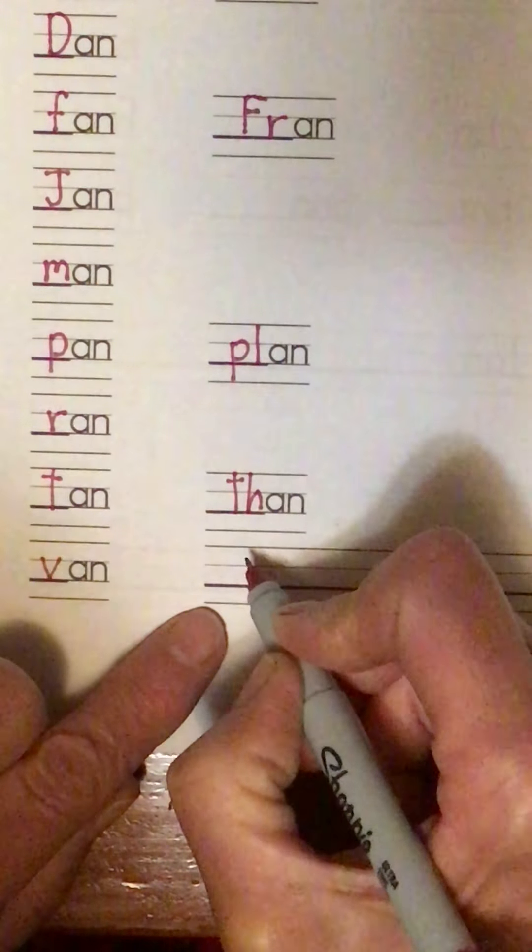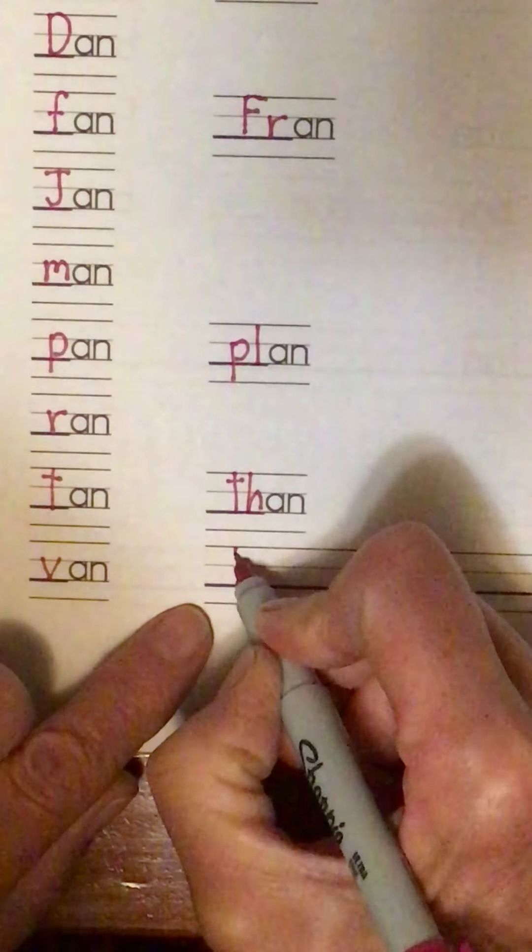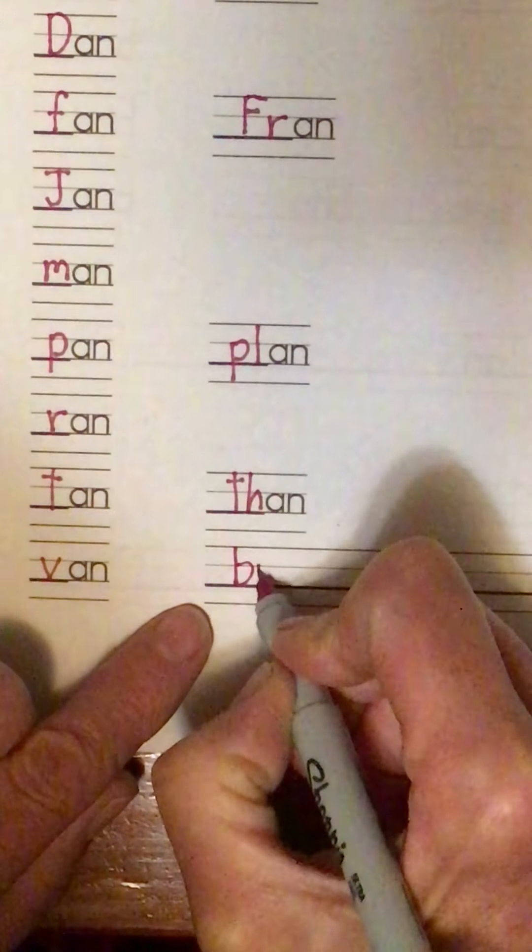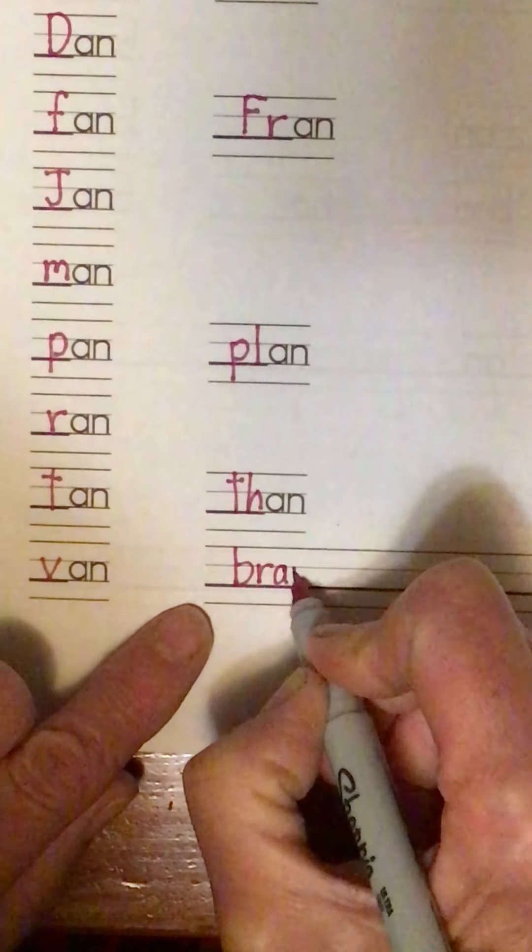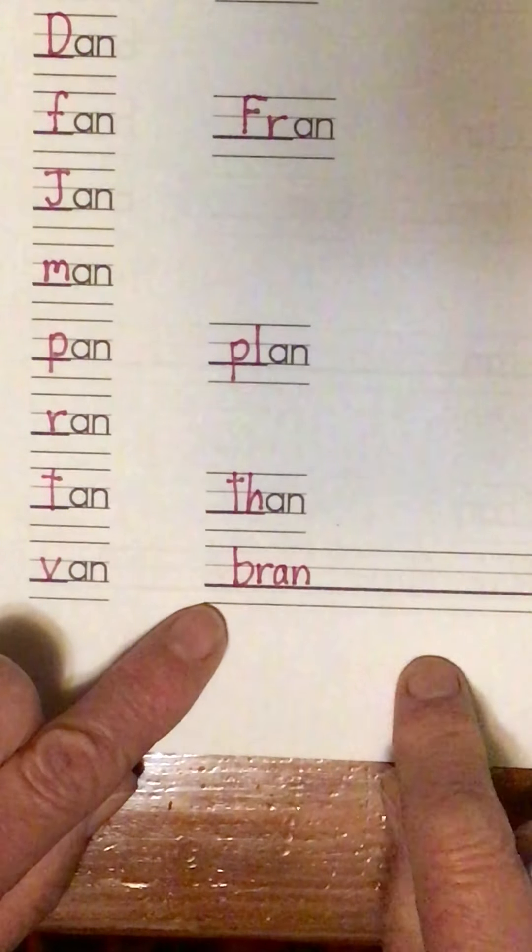So on B-A-N, if I do B-R, I get bran. Yep, like the cereal, bran flakes.